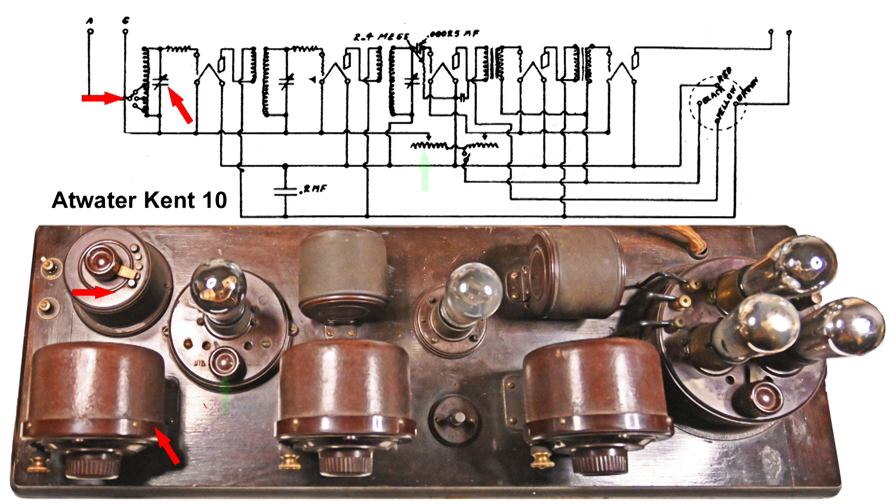Some other things that I want to point out: this right here is the left rheostat, and if you look at the wiring diagram, it controls the filament voltage for the first two tubes, the RF tubes, radio frequency. On the right we have another rheostat and it controls the filament for the last three tubes, the detector tube and two audio amplifiers.